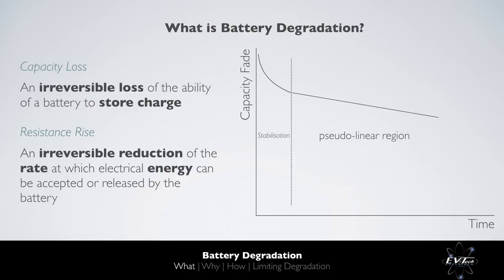The second region is the pseudo-linear region. Although battery degradation is a non-linear process, following the stabilisation phase, if usage conditions do not differ significantly, capacity fades in a roughly linear manner until we reach the knee point, where the behaviour changes and we enter what I call the Valley of Doom. Once we enter the Valley of Doom, positive feedback of degradation mechanisms results in an increasing rate of capacity loss and ultimately cell failure occurs very quickly.